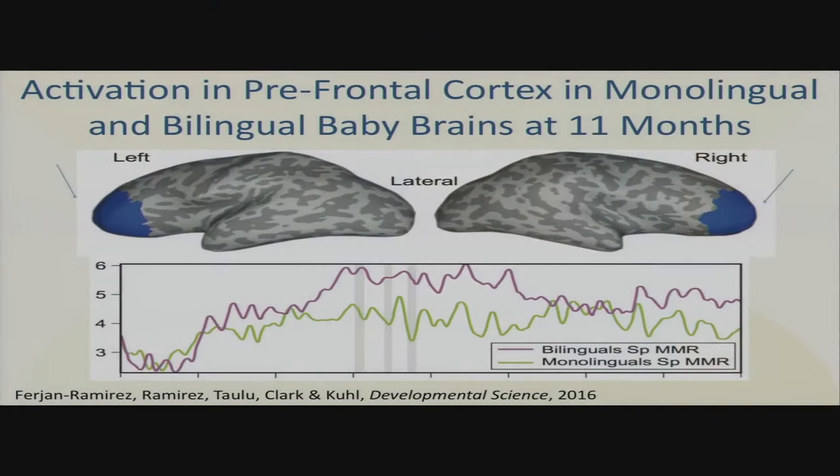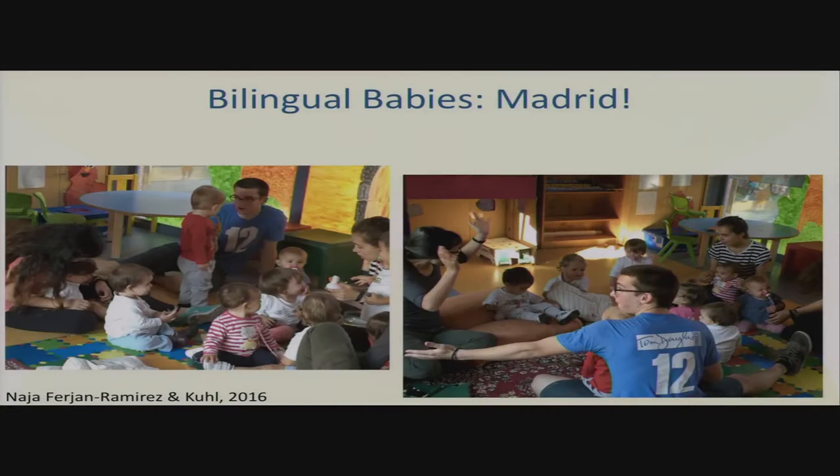Here's that prefrontal cortex activation — the red line is the bilinguals and the green line is the monolinguals. We're creating bilingual babies in Madrid. Madrid has four-month-olds — 55% of them — in nursery schools from 9 in the morning until 4 in the afternoon. I have 16 UW undergraduates spending their junior year abroad using all of the secret sauce we know to create that bilingual brain. In one hour a day, babies can ignite English learning even when parents don't speak English at home, with randomized controls.